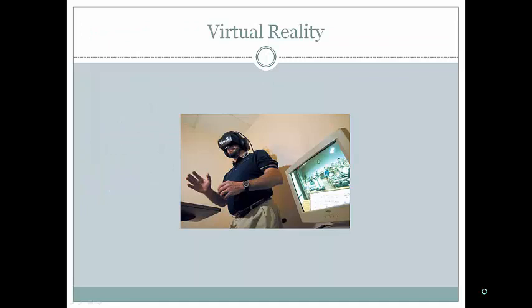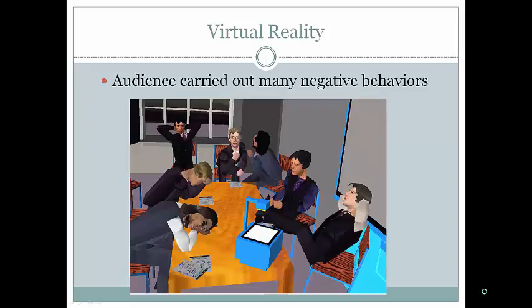One way to simulate exposure is through virtual reality with simulated audiences that can react differently. Another way uses confederates — a live audience — to practice giving a speech, with the audience acting in varying ways. David Barlow, the author of the textbook, has a facility in Boston that is state-of-the-art in virtual reality treatment, including work with the Boston VA on PTSD, which we'll discuss later.